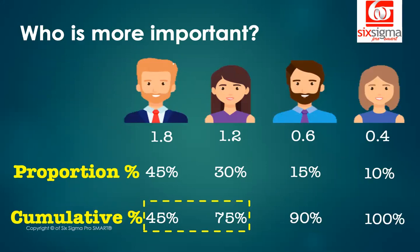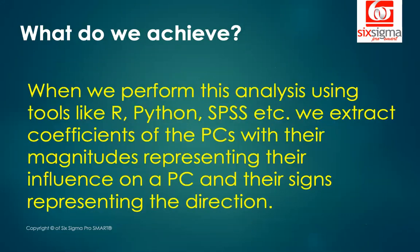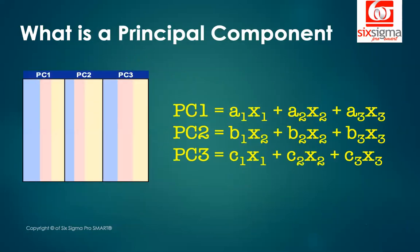This is just to give intuition — you would not apply PCA on just three or four variables. You may be dealing with data that has 90-odd columns, and with PCA you might compress it to maybe 15 to 20 columns. That's where PCA becomes very relevant. When you use a tool like Python or R, you can extract the coefficients — these are the A1s, A2s, and A3s — and their signs represent the direction.